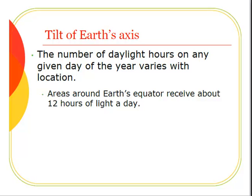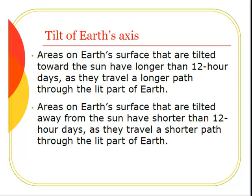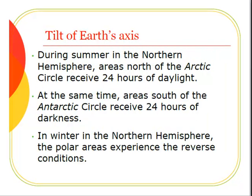The number of daylight hours on any given day of the year varies with location. Areas around Earth's equator receive about 12 hours of light a day. Areas on Earth's surface tilted toward the Sun have longer than 12-hour days, as they travel a longer path through the lit part of Earth. Areas tilted away from the Sun have shorter than 12-hour days. During summer in the Northern Hemisphere, areas north of the Arctic Circle receive 24 hours of daylight, while areas south of the Antarctic Circle receive 24 hours of darkness.